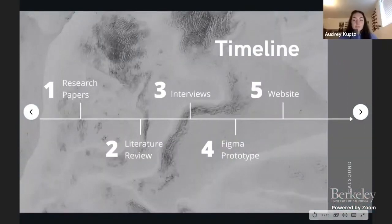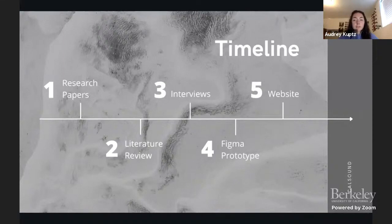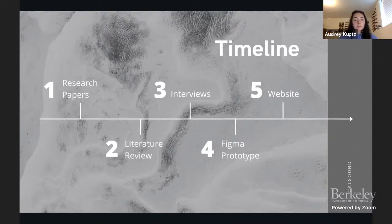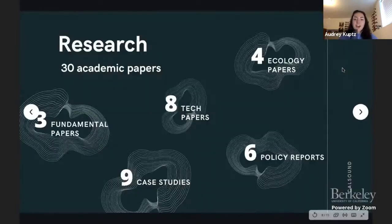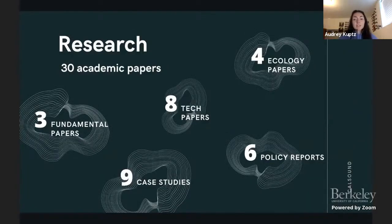Here we have a timeline of the steps we took throughout our project process. We started as a full team researching the field of soundscapes, working on an initial draft of the literature review, and performing interviews. From there, we split into sub-teams working in parallel to complete the literature review and develop a Figma prototype, which evolved into our current website. Our first step was research, where we divided 30 academic papers among ourselves so that we each read three before presenting our paper's main takeaways and relevance to the project.